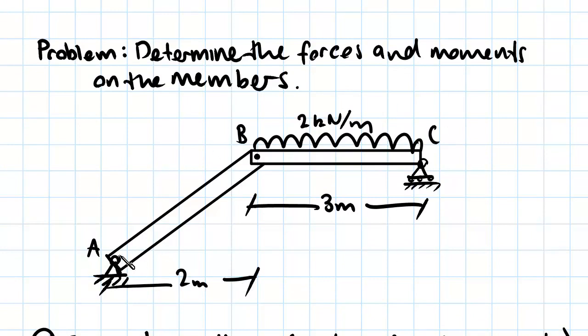So it's simply supported. We have one pin joint and one roller support. The geometry is 2 meters in the x direction between A to B, and it's 3 meters between B to C in the x direction.